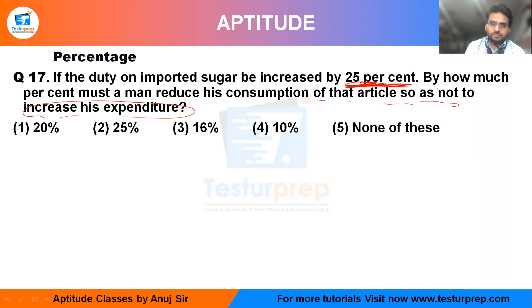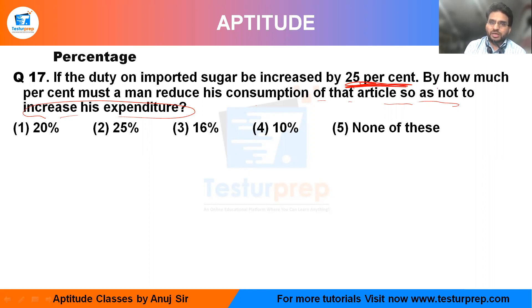In the basic playlist on percentage there is a shortcut method. I am going to use that particular method, in which I have clearly explained how to handle single increment and decrement type questions. They have said 25%, which will be equal to one-fourth — that is in the form of a fraction.